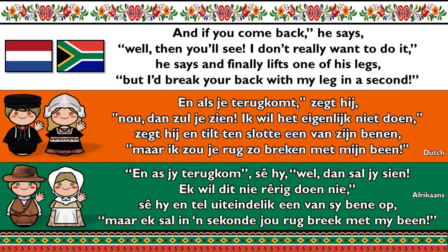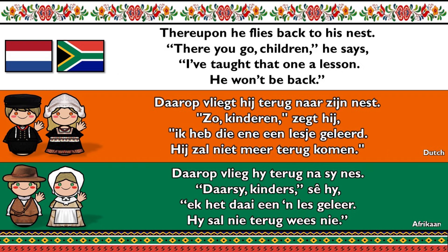De leeuw boeit het niet en loopt door. Dat maakt dat de kleine hem lelijk uitscheld. 'Hij heeft geen reden om daar te zijn,' zeg ik je. 'En als je terugkomt, dan zul je zien. Ik wil het eigenlijk niet doen,' zegt hij, 'en til ten slotte één van zijn benen. Maar ik zou je rug zo breken.' Die leeuw steur hem nie aan en hou aan loop. 'Jij het geen reden om daar te wees nie,' zegt hij. 'En als je terugkomt, dan zal je sien. Ek wil het nie rarig doen,' zegt hij, 'en tel uiteindelijk één van zijn bene op. Maar ik zal in een seconde jou rug breek met mijn been.' Daarop vliegt hij terug naar zijn nest. 'Zo, kinderen,' zegt hij, 'ik heb die ene in lessen geleerd. Hij zal niet meer terugkomen.' Daarop vliegt hij terug na sy nes. 'Daar, sy kinders,' zegt hij, 'ek het die een les geleer. Hij zal nie terugkom nie.'